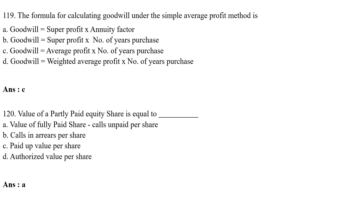MCQ number 120: The value of a partly paid equity share is equal to — Option A: value of fully paid share minus calls unpaid per share; Option B: calls in arrears per share; Option C: paid-up value per share; Option D: authorized value per share. The correct answer is Option A — value of fully paid share minus calls unpaid per share. So, value of partly paid equity share = value of fully paid share minus calls unpaid per share.